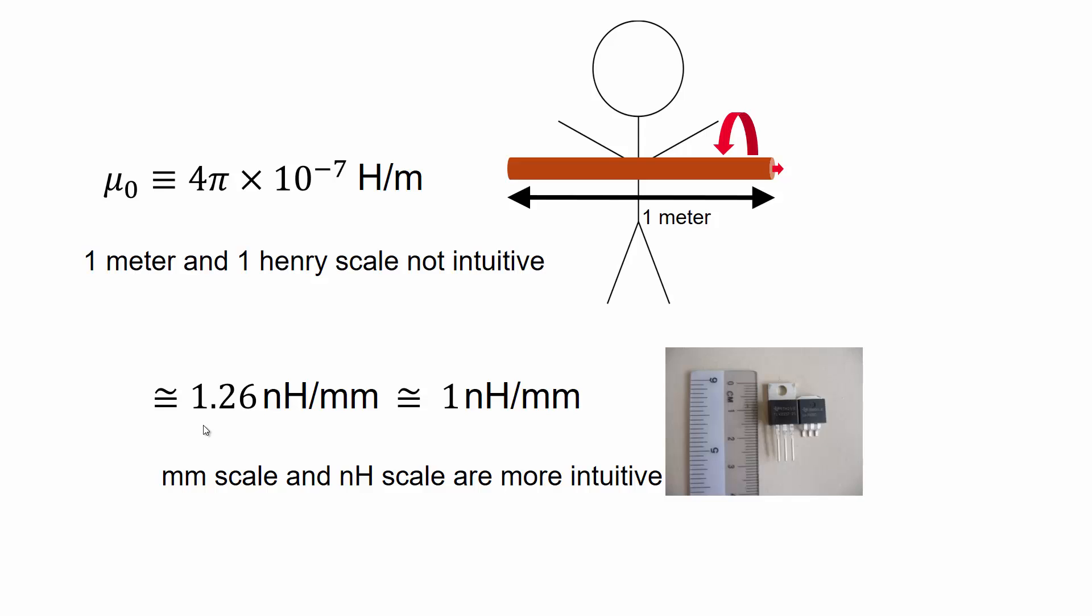So it turns out that this number is 1.26 nanohenries per millimeter. But for our purposes, we're going to approximate quite heavily in this video. So I'm just going to round it down to 1 nanohenry per millimeter to make it very easy to remember and more intuitive.